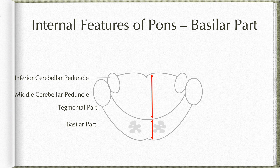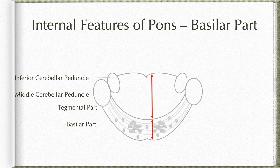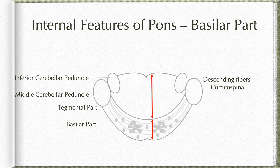The basilar part is made up of vertically descending fibers, a collection of gray matter, and transversely running fibers. Transversely running fibers in the basilar part appear whitish because the fibers are cut along their length, whereas vertically descending fibers appear grayish because they are cut across their length. Vertically descending fibers include corticospinal fibers, corticonuclear fibers, and corticopontine fibers. Corticospinal fibers form a compact bundle in the midbrain passing through the crus cerebri, but as they reach the pons they get separated into multiple fascicles by these transversely running fibers. The corticospinal tract fibers then descend straight to the medulla, where they once again form a compact bundle known as the pyramids.